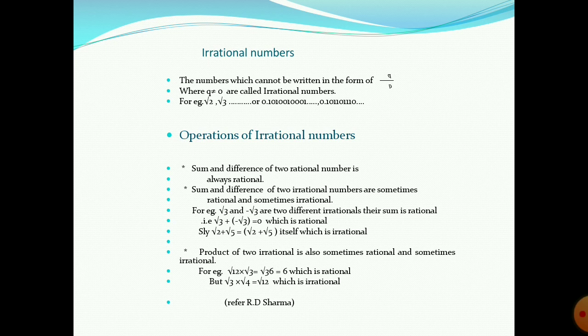Similarly, the product of two irrational numbers is also sometimes rational and sometimes irrational. For example, root 12 and root 3 are two different irrational numbers. When we take their product, the result is root 36, which is equal to 6 — a rational number. But if we take root 3 and root 4, their product is root 12, which is an irrational number. Therefore, the product of two irrational numbers is also sometimes rational and sometimes irrational.